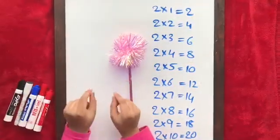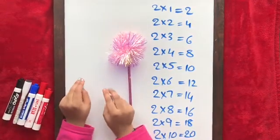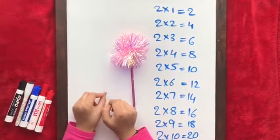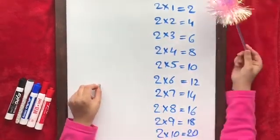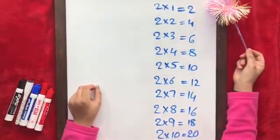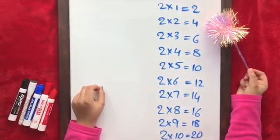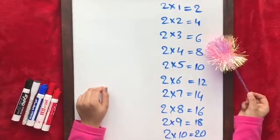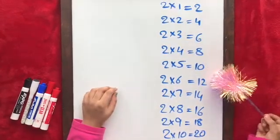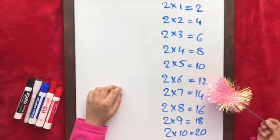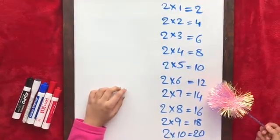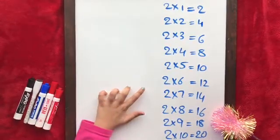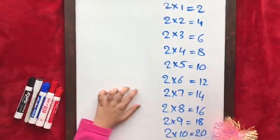Hi guys, welcome to my channel. Today we're going to do the two times table, but first let's see the two times table. 2 times 1 is 2, 2 times 2 is 4, 2 times 3 is 6, 2 times 4 is 8, 2 times 5 is 10, 2 times 6 is 12, 2 times 7 is 14, 2 times 8 is 16, 2 times 9 is 18, 2 times 10 is 20.